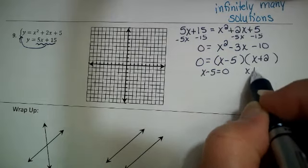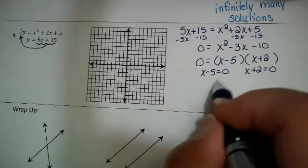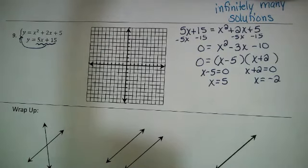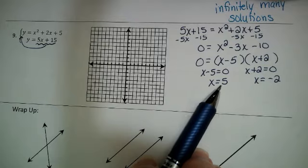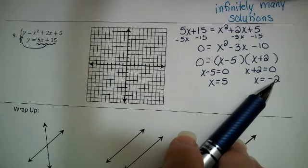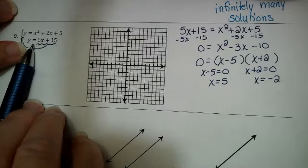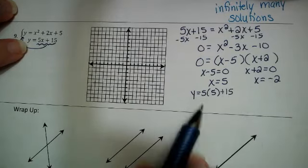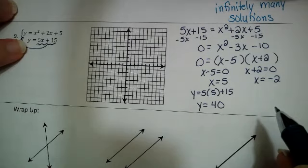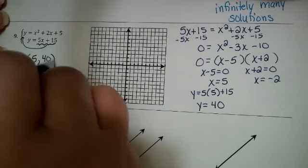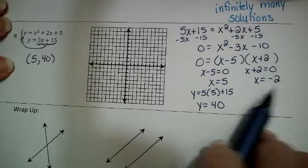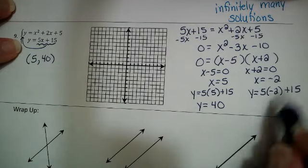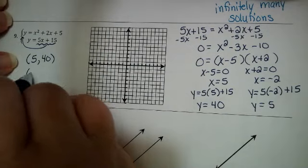I need factors of negative 10 that add up to negative 3, giving (x minus 5)(x plus 2). Setting each factor equal to 0: x minus 5 equals 0 gives x equals 5; x plus 2 equals 0 gives x equals negative 2. There are two answers to this system. For x equals 5, using the linear equation: y equals 5 times 5 plus 15 equals 25 plus 15 equals 40, giving solution (5, 40). For x equals negative 2: y equals 5 times negative 2 plus 15 equals negative 10 plus 15 equals 5, giving solution (negative 2, 5).